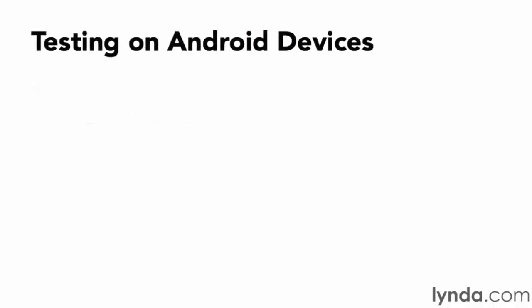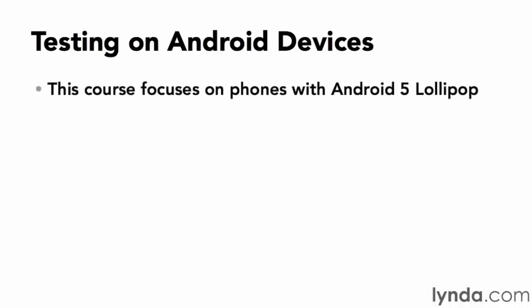To test your apps you should have at least one Android device, preferably a cell phone. This course focuses mostly on Android 5 or Lollipop, but if you only have a phone running Android 4 — such as Jelly Bean or KitKat — that's fine. Most of what I'll show will work on those versions as well. You can also test on any version of Android by creating an Android Virtual Device or AVD for use with the Android emulator.